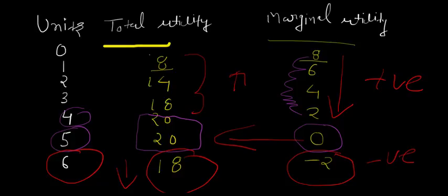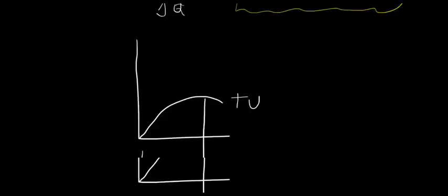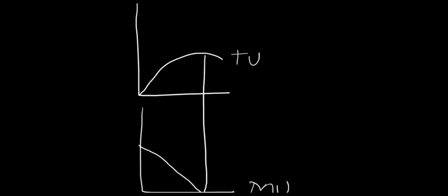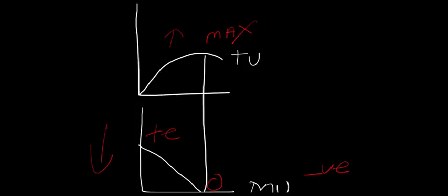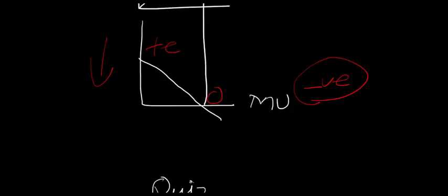It is pure numbers, pure consumer behavior, purely your response. Let us understand this better with the help of a diagram. As long as marginal utility is declining but remaining positive, total utility is increasing. When your marginal utility becomes zero, your total utility becomes maximum. And when your marginal utility finally becomes negative, your total utility starts declining. This is the relationship between total utility and marginal utility.